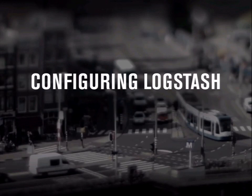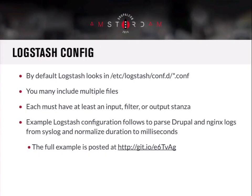On configuring Logstash: as I said, Logstash just has three pipelines — input, output, and filters. By default, Logstash has its configuration in /etc/logstash/conf.d, and you can put any number of snippets there. This is friendly to config management — if on one server you're parsing Apache logs and on another you have Nginx logs, you can just have snippets deployed by Chef or Ansible. You can use multiple files, and every file must have at least one of those input, filter, or output stanzas.